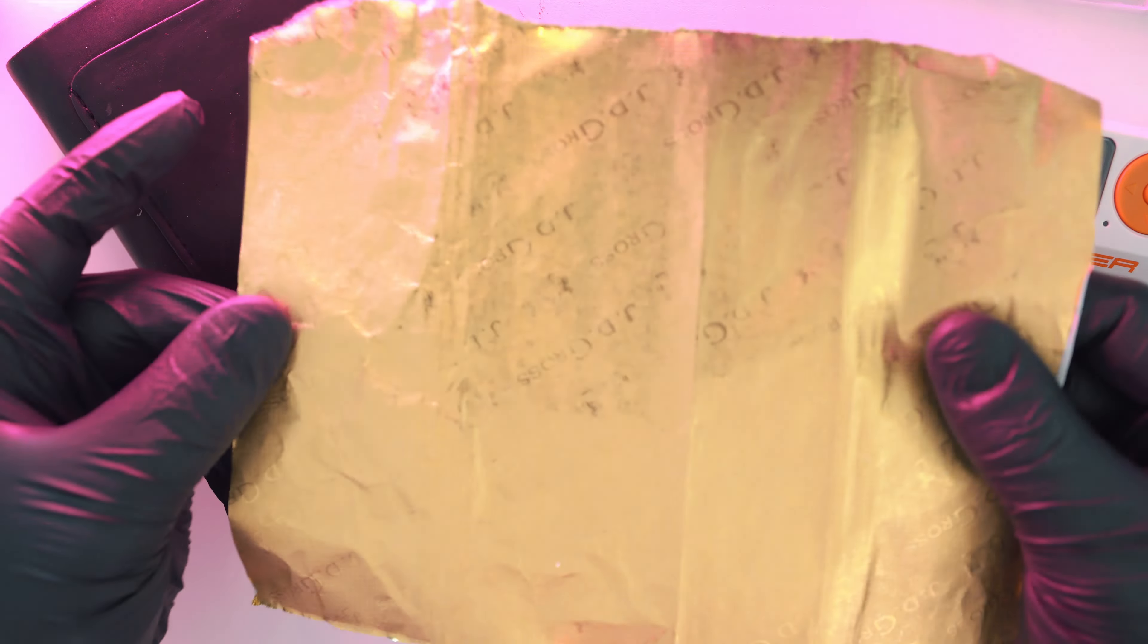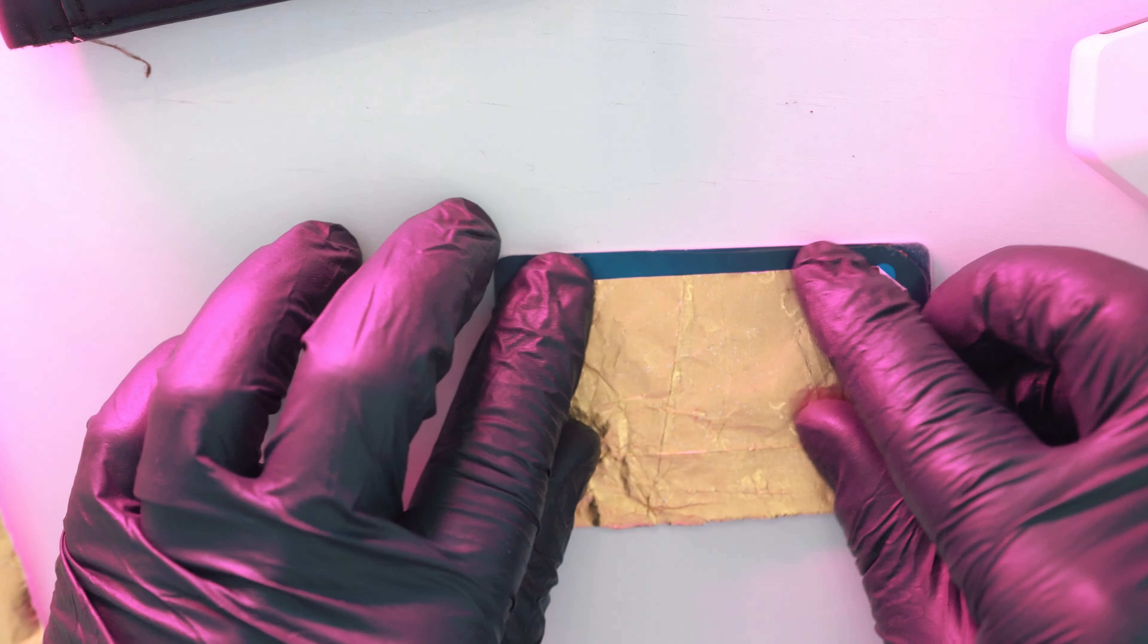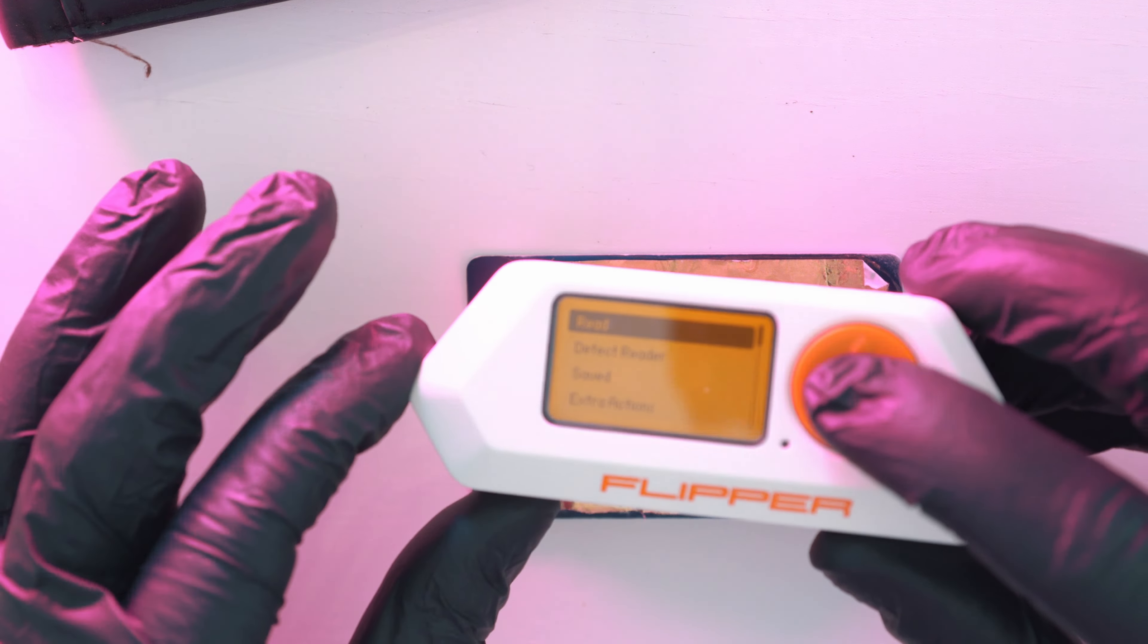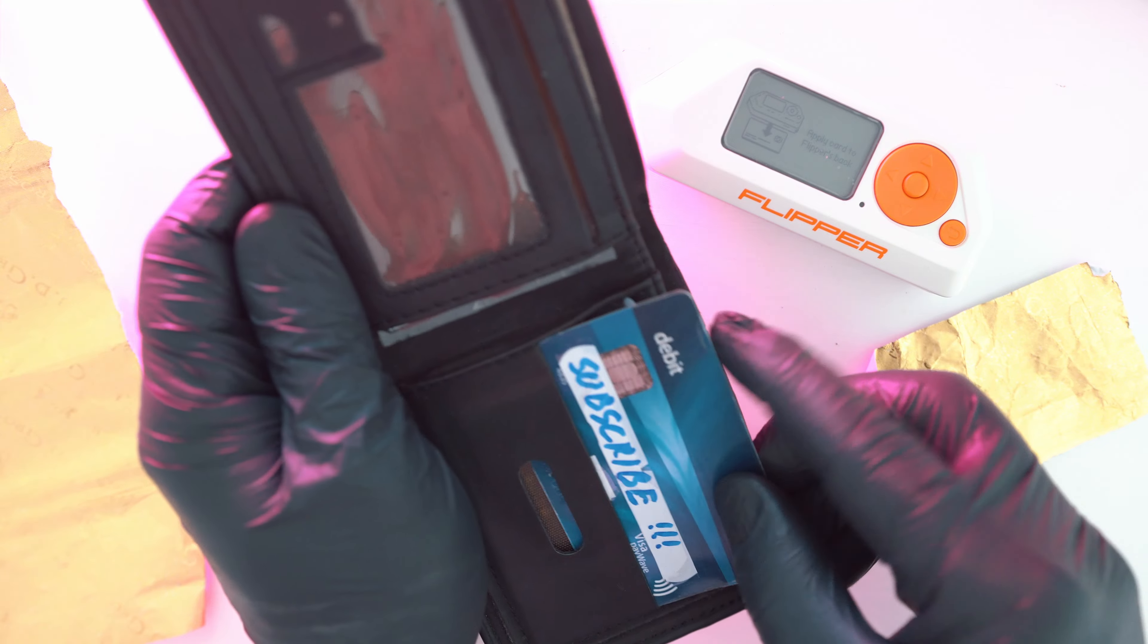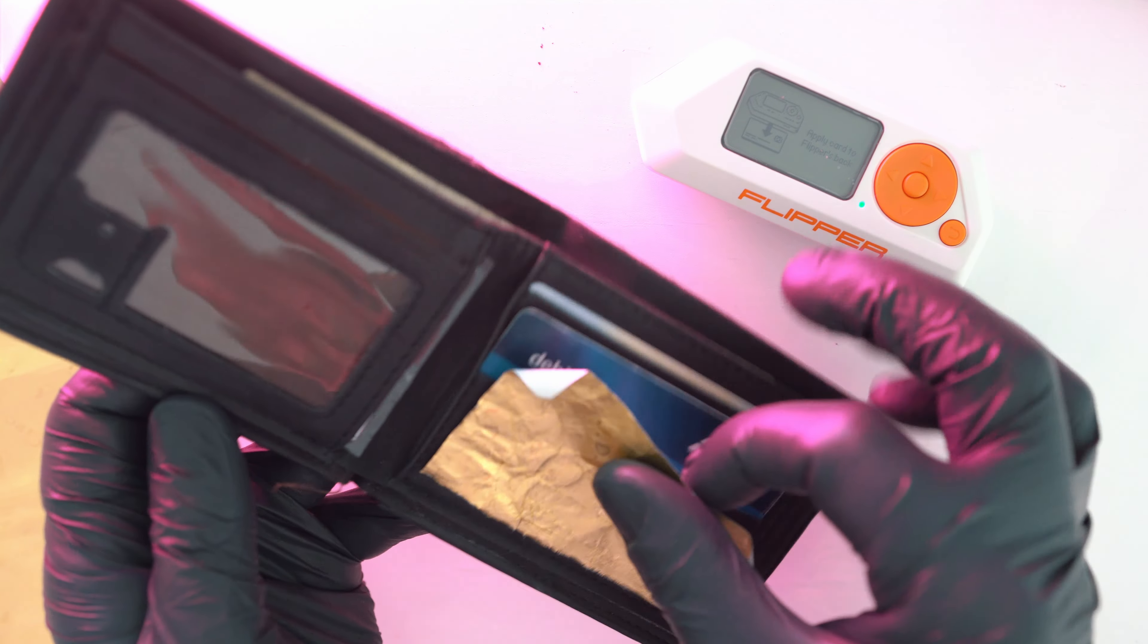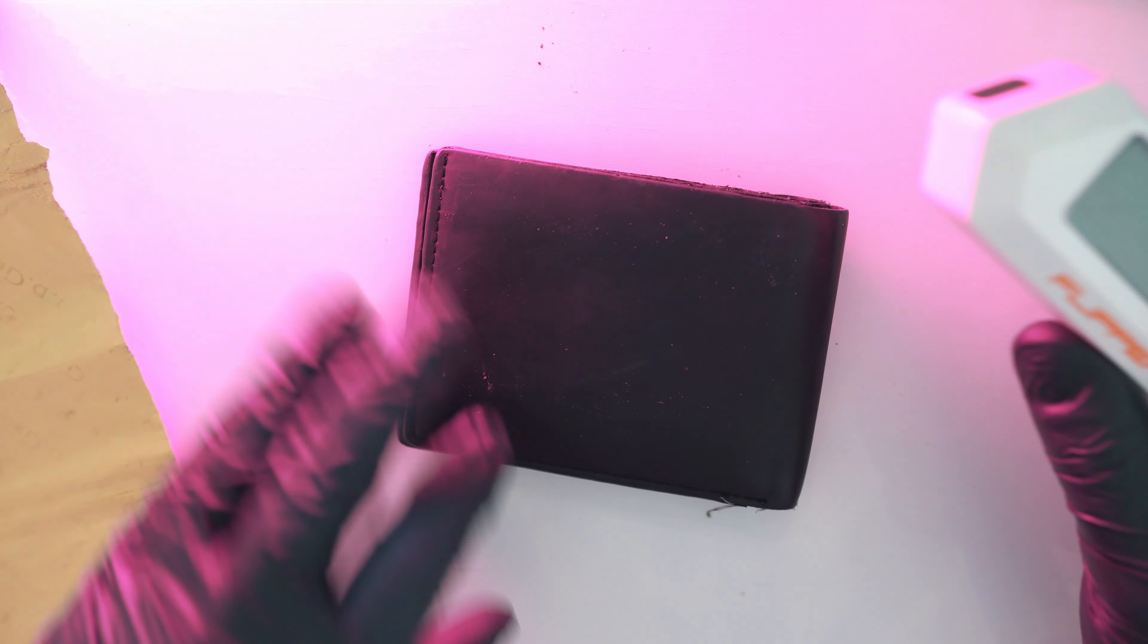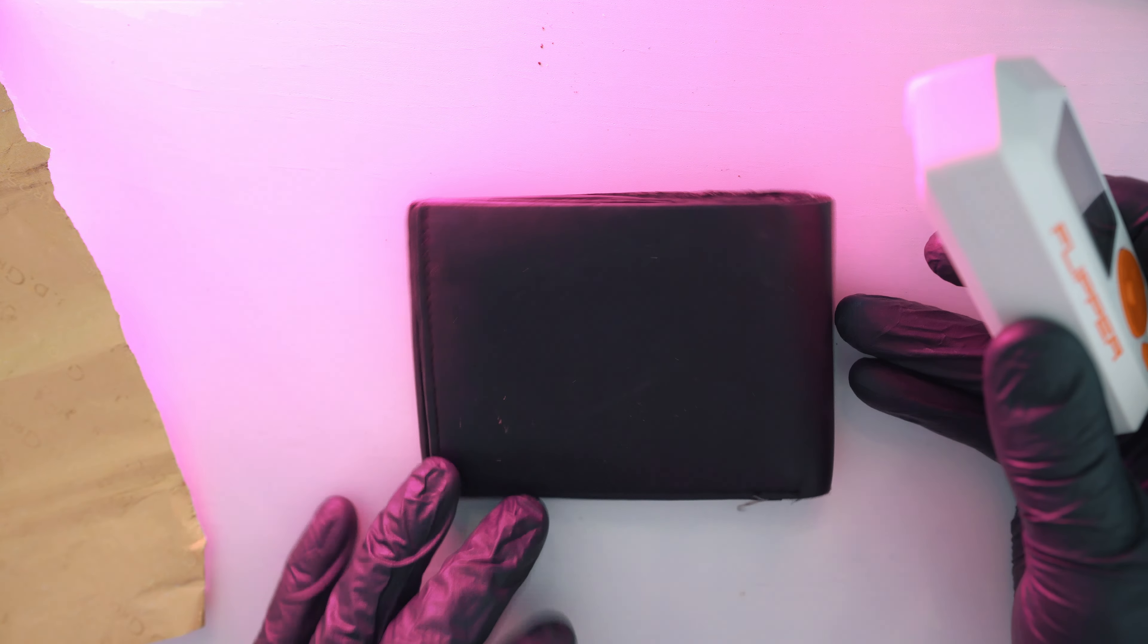Alloy foil acts like a shield for radio waves. So if I place a little piece on my card, it won't be picked up by flipper zero. Here we go, it works. Now let's try it in the wallet somewhere here, and nothing. It works like a charm even if it's underneath the card.